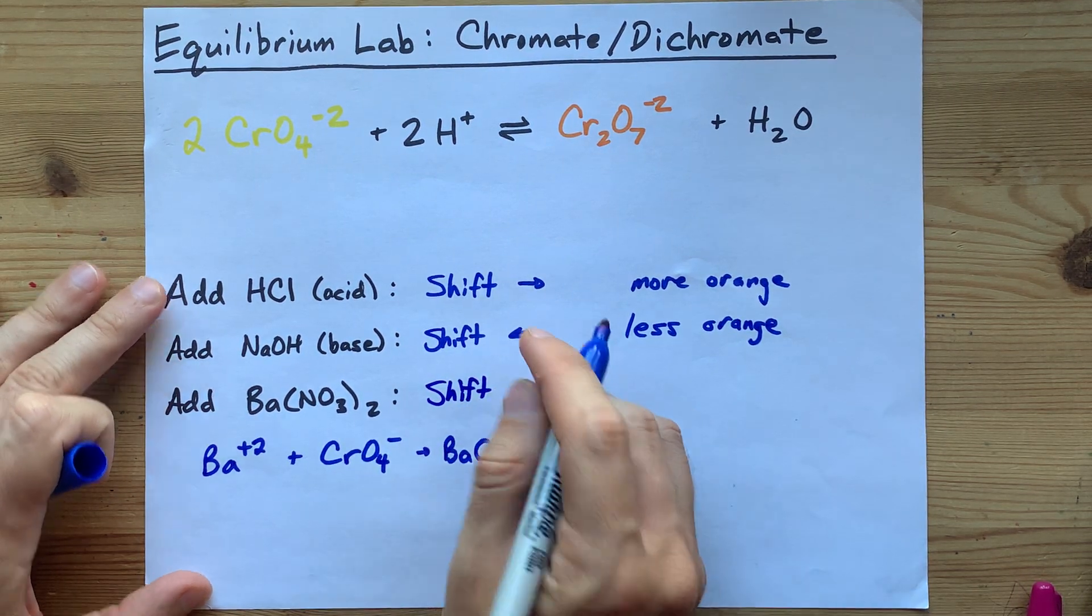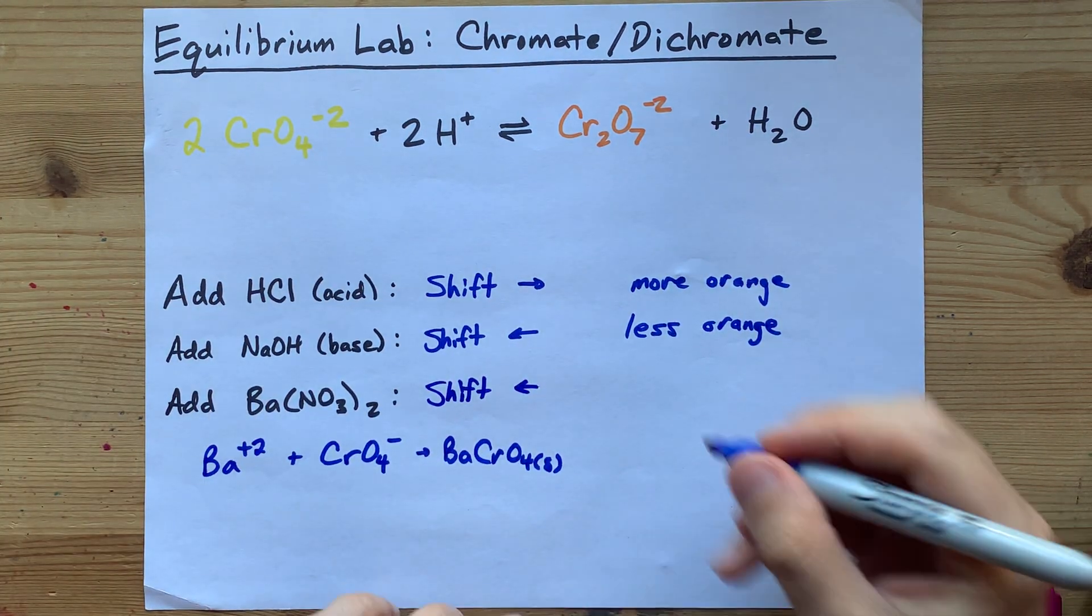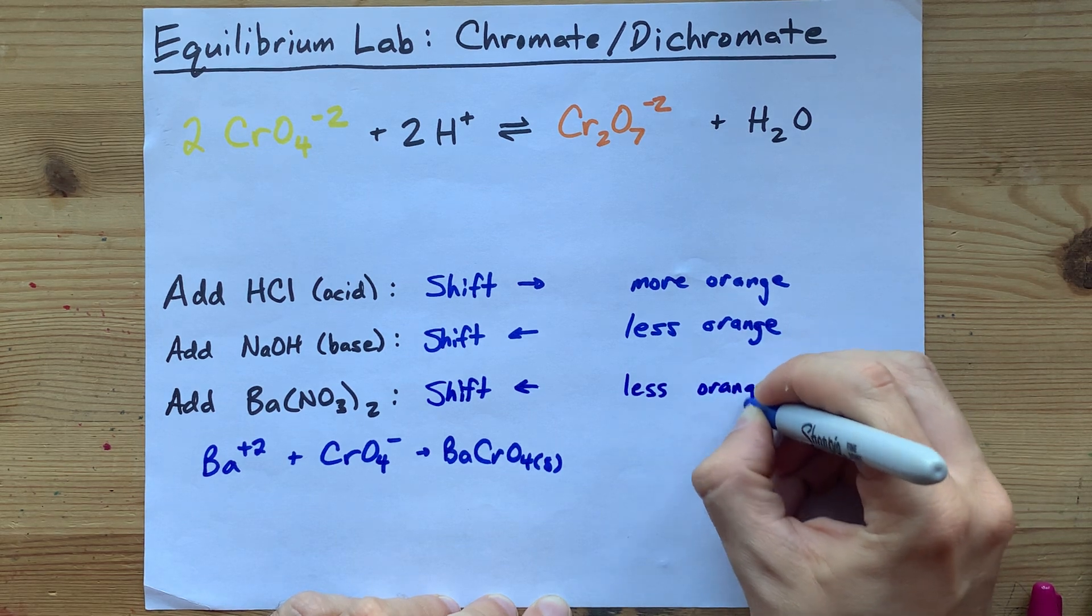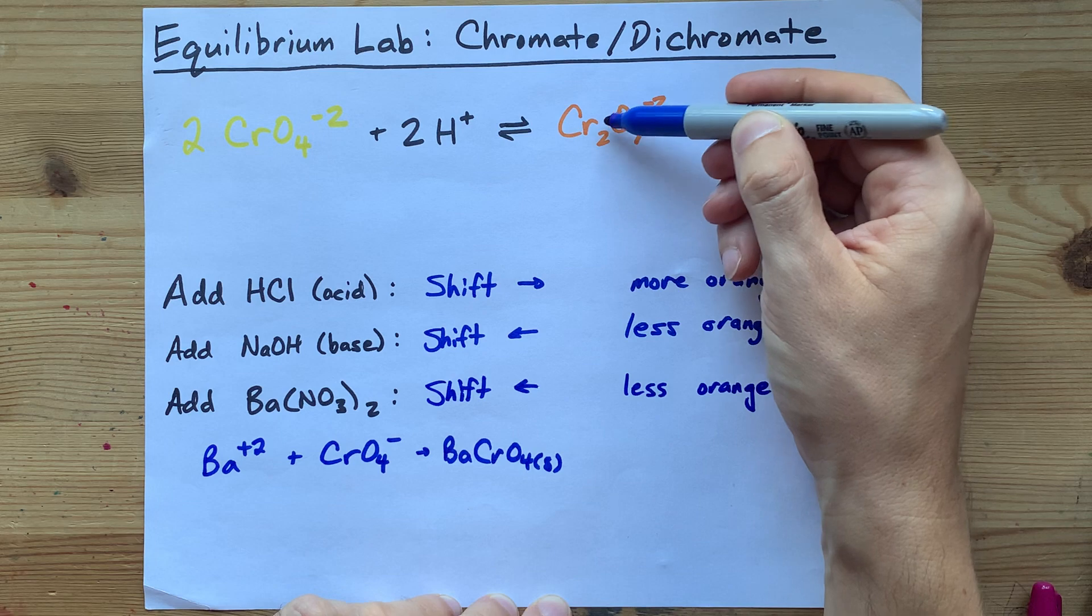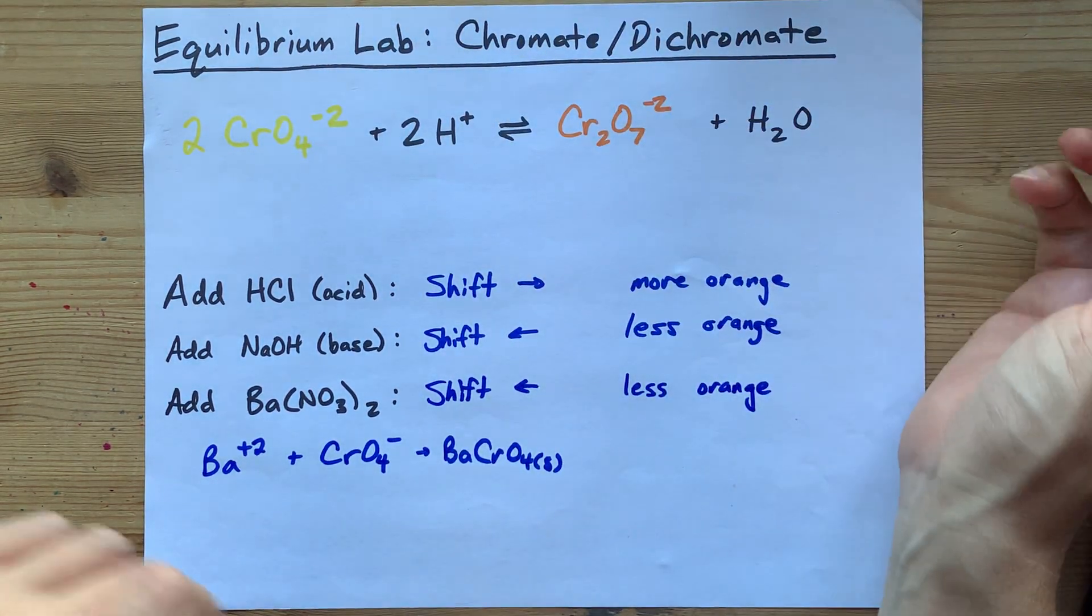Push the equilibrium to the reactant side. And again, it'll appear less orange because you will have decreased the amount of Cr2O7. Some of that had to sacrifice itself to replace the missing CrO4.